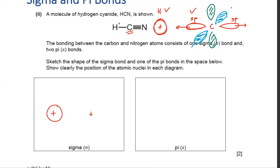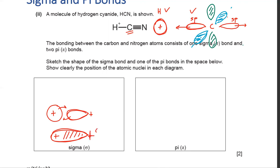That's the sigma bond diagram. For the pi bond, there is a sigma bond between carbon and nitrogen; carbon has spare p orbitals lying parallel to nitrogen's orbitals. These parallel orbitals overlap above and below the internuclear axis — you shade that region — and that's your pi bond. There are two pi bonds in a triple bond.